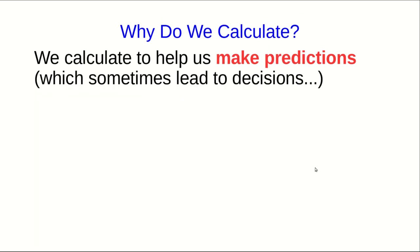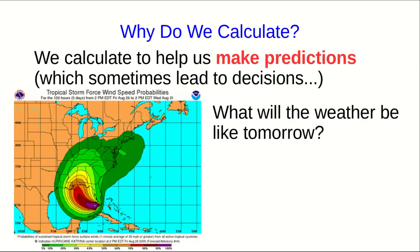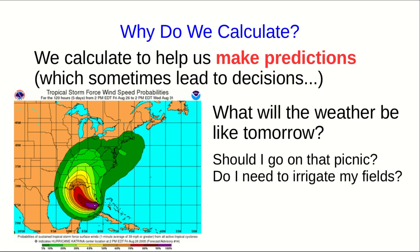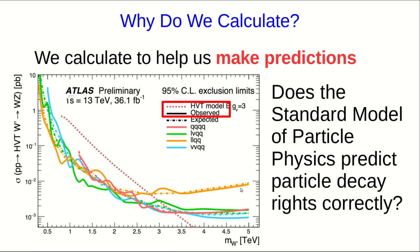On the flip side, why do we calculate rather than measure? In general, we calculate to help us make predictions, which sometimes lead to decisions. For example, a prediction which takes a lot of calculation is what will the weather be like tomorrow, which could help you decide whether you should go on a picnic, or whether you should irrigate your fields, or if you're living in New Orleans in 2005, should you evacuate?